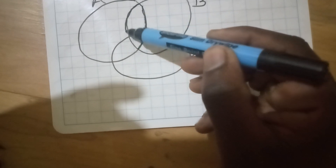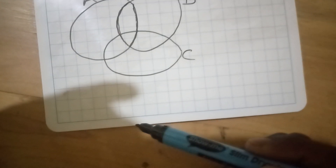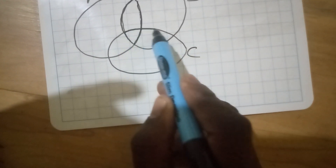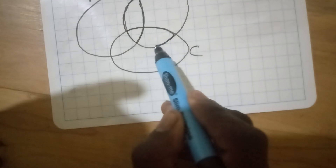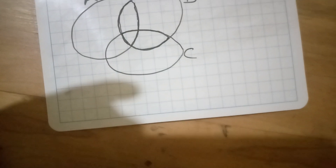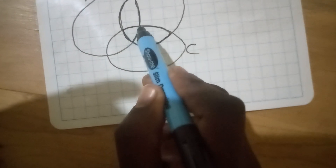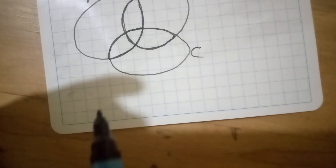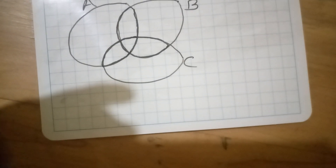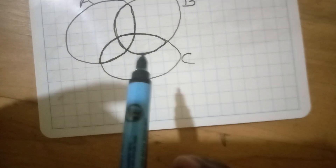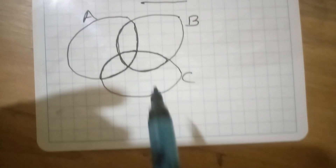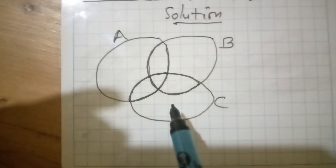The sets are intersecting in multiple regions: A and B intersect here, A and C intersect here, and B and C intersect in their own region. You will insert the elements appropriately into the intersection of A and B, the intersection of A and C, and the intersection of B and C.